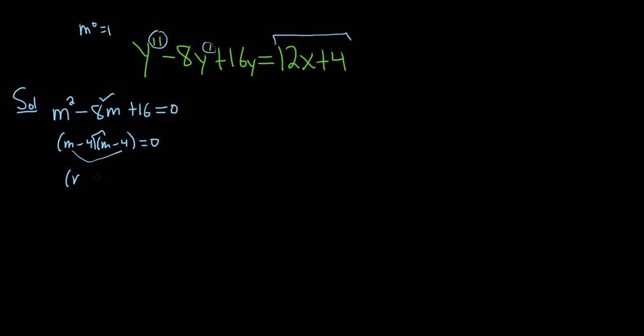You can write this as m minus 4 squared, and this is equal to 0. So m is equal to 4. This has multiplicity 2, so we have a repeated root.